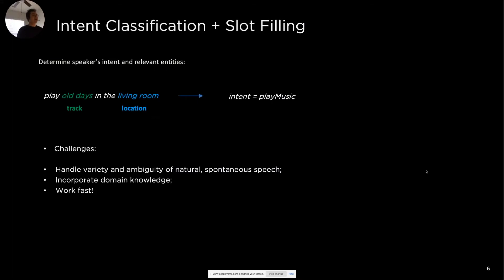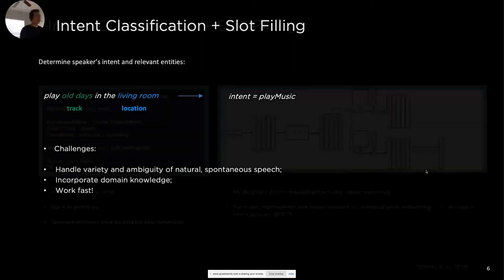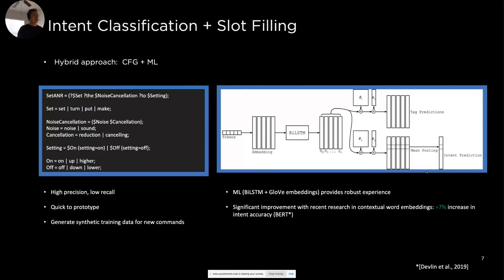The challenges include handling the variety and ambiguity of natural speech, incorporating domain knowledge in music, and working fast. A typical workflow involves parsing and intent classification using a hybrid approach of context-free grammar (CFG), which has high precision but low recall, and is good for quick prototyping. You can also generate synthetic training data from CFG for new commands for ML. The ML component could be any type of RNN or transformer, performing at least two tasks together in a multitask setting.